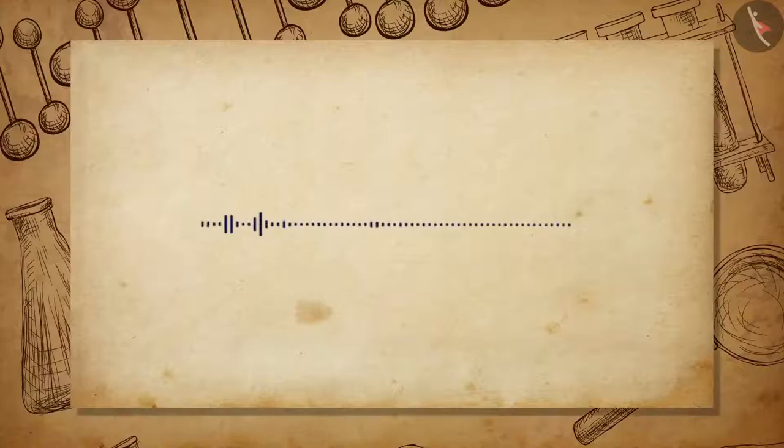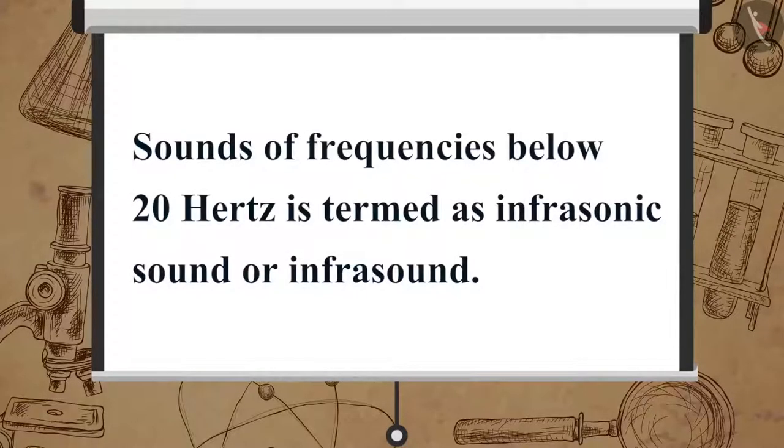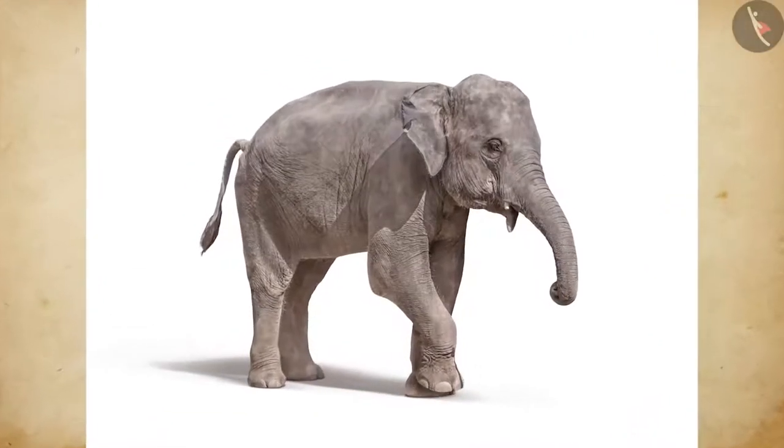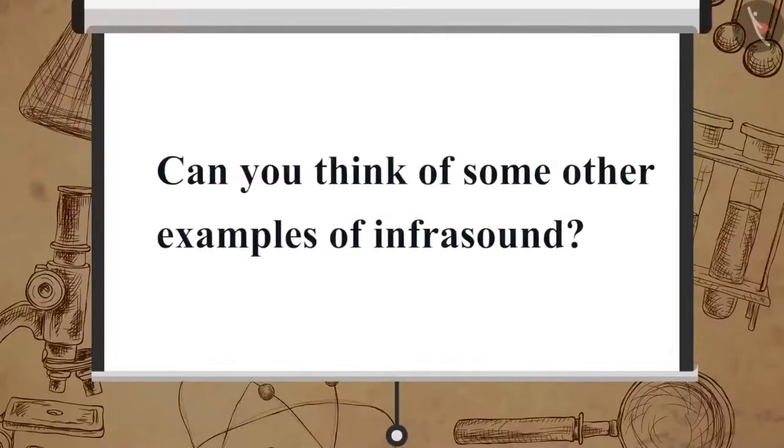Now, let us learn about the low range of sound which is not audible to human beings. Sounds of frequencies below 20 Hz is termed as infrasonic sound or infrasound. Elephants also produce sound in the infrasound range. Can you think of some other examples of infrasound?